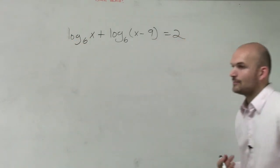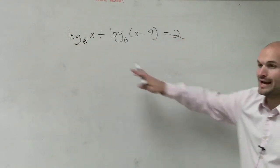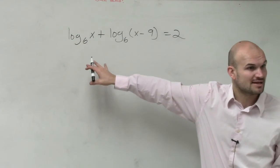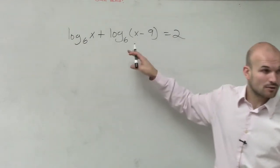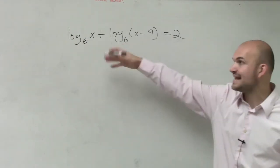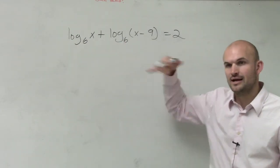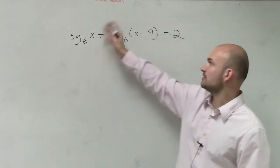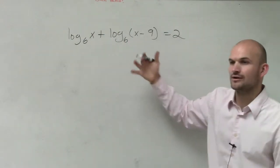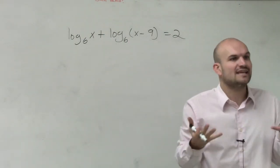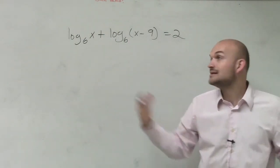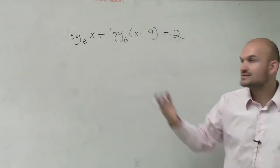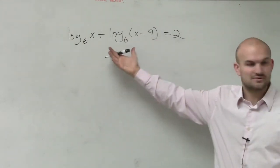But here we kind of have a problem. One, I don't have one logarithm — I have two logarithms, and they're not equal to each other, so I can't cancel these out. A big misconception is to say two logarithms cancel out — no, no, no. That's only when the two logarithms are set equal to each other. Now, they do have the same base, but I need a way to somehow combine these.